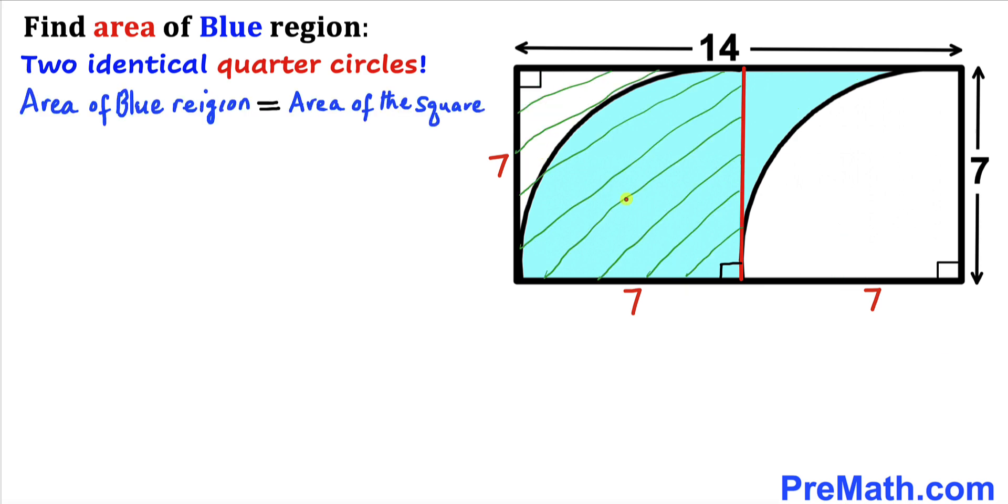So therefore we are going to conclude that the area of this blue shaded region is going to be equal to the area of this whole square. Now let's recall the area of a square formula: Area equals s squared where s represents the side length of the square.